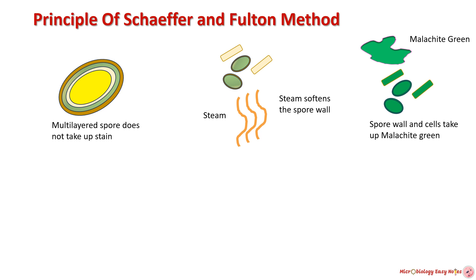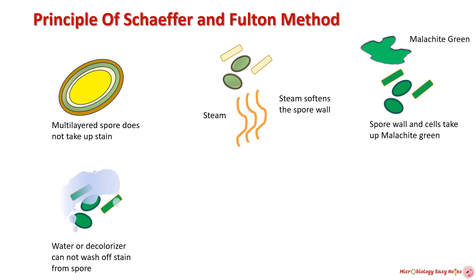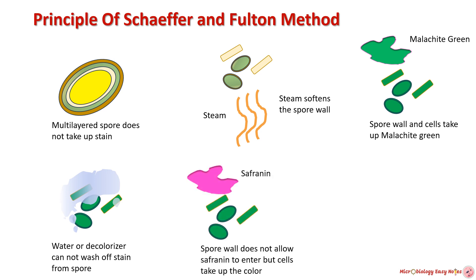Once the endospore absorbs the stain, it is not removed by subsequent washing with decolorizing agents or water. When counterstained with safranin, the vegetative cell takes the color of safranin and appears red or pink, while the endospore rejects the safranin stain and appears green.